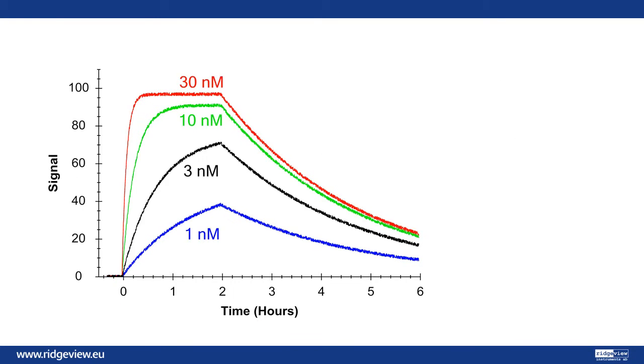The on-rate is related to the properties of the interaction, but also the concentration of the ligand or drug. A higher ligand concentration speeds up the binding. This means that it's possible to compensate for a slow interaction with a high drug dose, assuming that the side effects of the drug are not too severe.